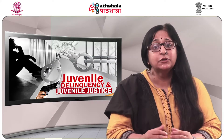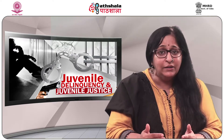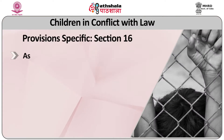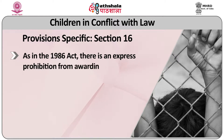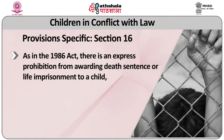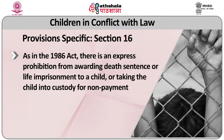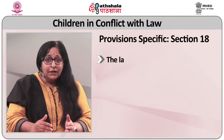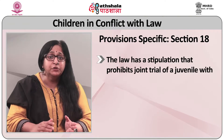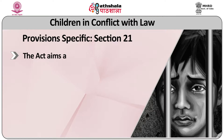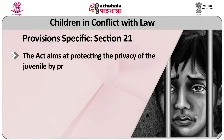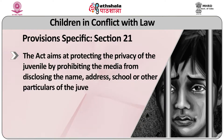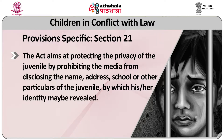This particular provision appears to give an arbitrary power, as there are no indications as to how the discretion by the juvenile justice board was to be used. As in the 1986 Act, there is an express prohibition from awarding death penalty or life imprisonment to a child, or taking a child into custody for non-payment of fine or for failure to furnish a security. The law also has a stipulation prohibiting joint trial of a juvenile with an adult. The 2000 Act aimed at protecting the privacy of the juvenile for the first time by prohibiting the media from disclosing the name, the address, the school or any other particulars of the juvenile by which his or her identity may be revealed.